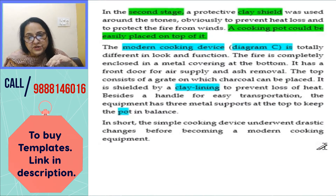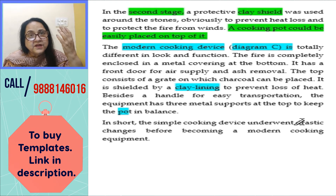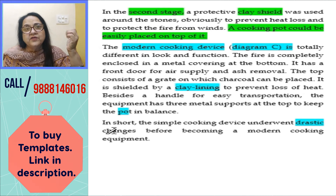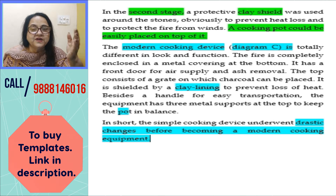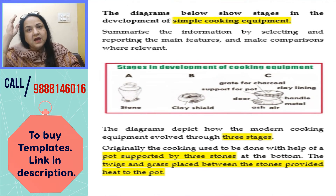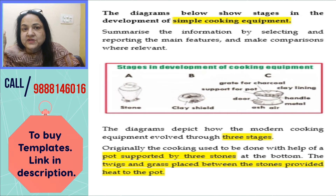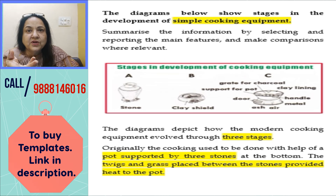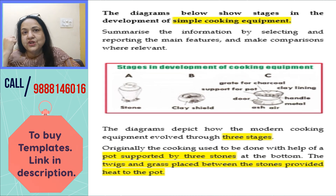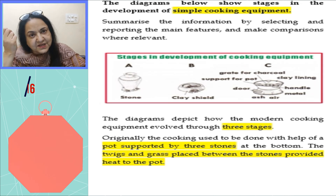This is what I have tried to explain: the three stages. In short, what you observe is that cooking equipment changed drastically from stage one to stage three — this is development and evolution. This is what a diagram task is. It is to be written in 150 words. You just have to explain what you see — it is a picture comprehension. Divide it into stages and don't get confused. Stay safe. God bless you.